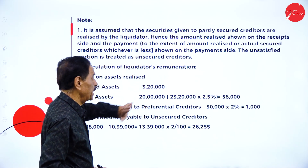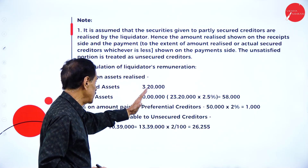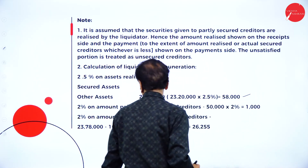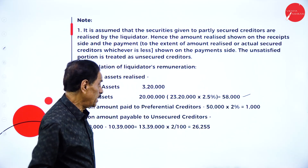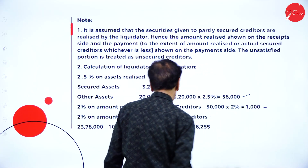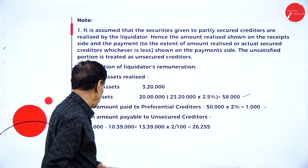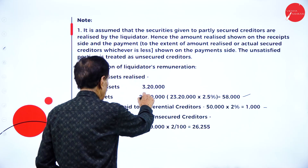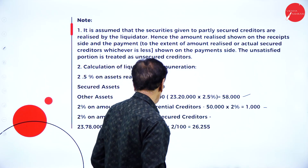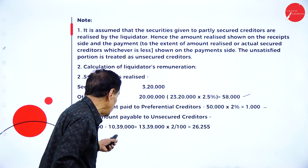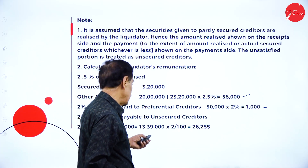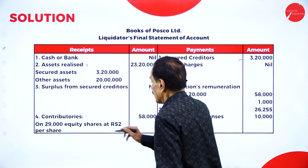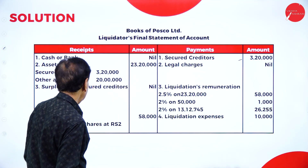Working note — calculation of liquidation commission: 2.5% on assets realized of Rs.23,20,000 works out to Rs.58,000. Then 2% on amount paid to preferential creditors of Rs.50,000 equals Rs.1,000. For 2% on unsecured creditors: total available is Rs.23,78,000 — that is Rs.23,20,000 plus call money received — and the expenditure made is Rs.10,39,000, leaving Rs.13 lakh. So 2% works out to Rs.26,255.